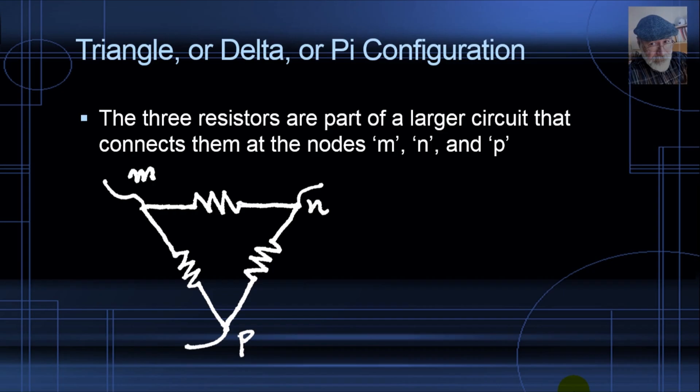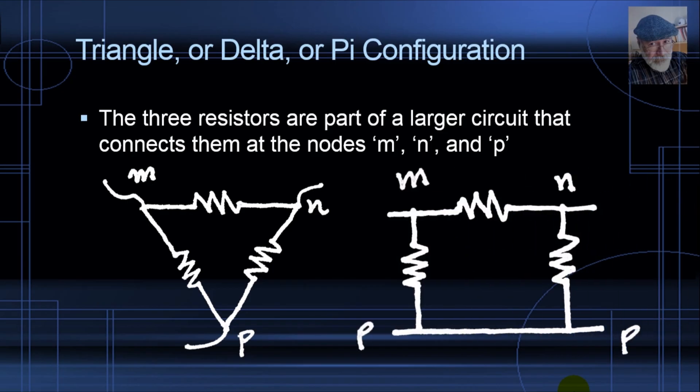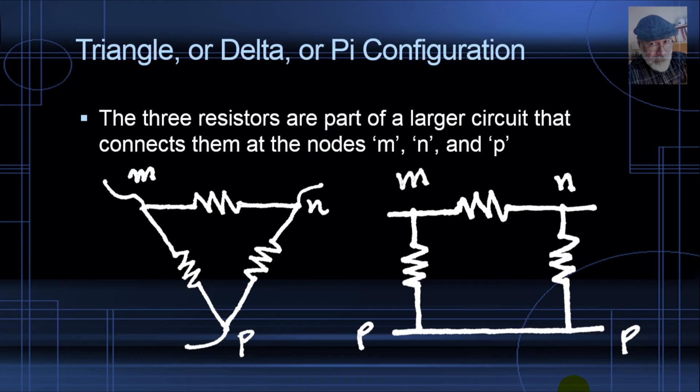Or a delta, because if you draw that appropriately it looks like the uppercase Greek letter delta. Or, as some engineers say, if you stretch the node P at the bottom, that configuration looks like the lowercase Greek letter pi. So call it triangle, delta, or pi. When you have a configuration like that of three resistors, the resistors can have any values — they don't have to be the same.